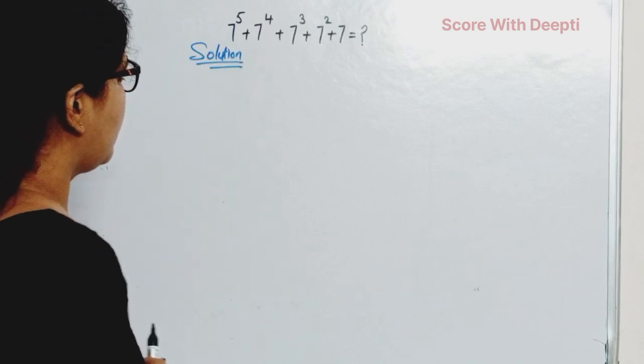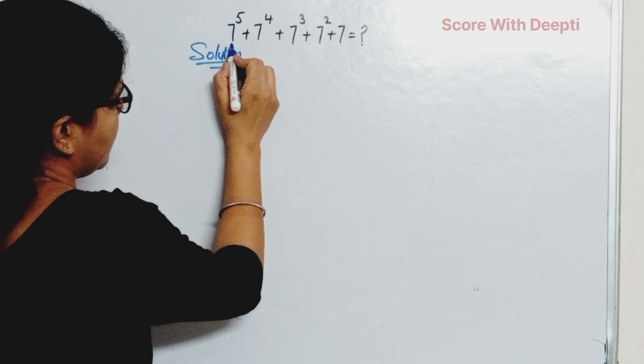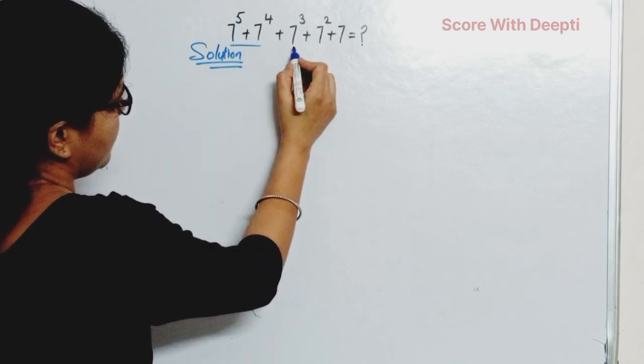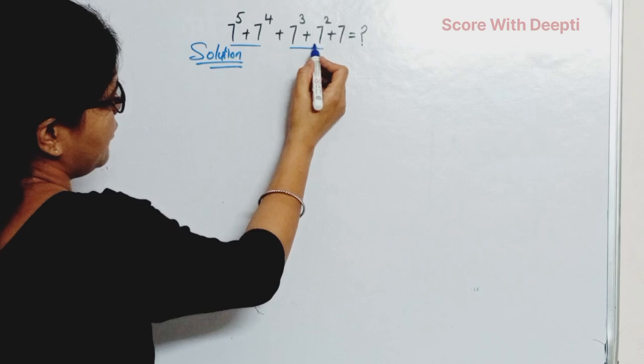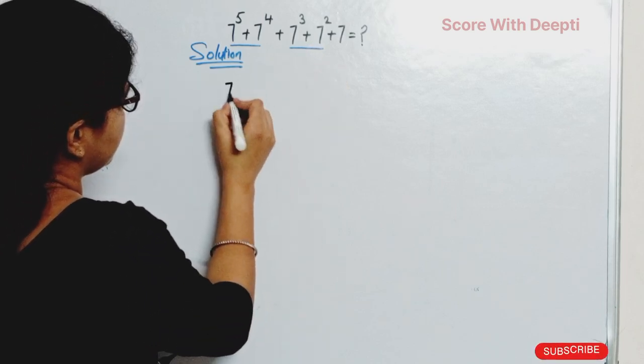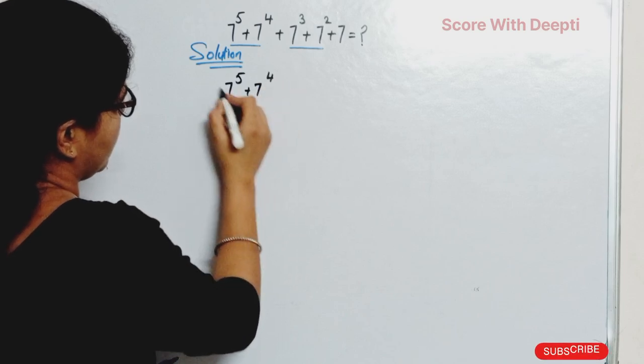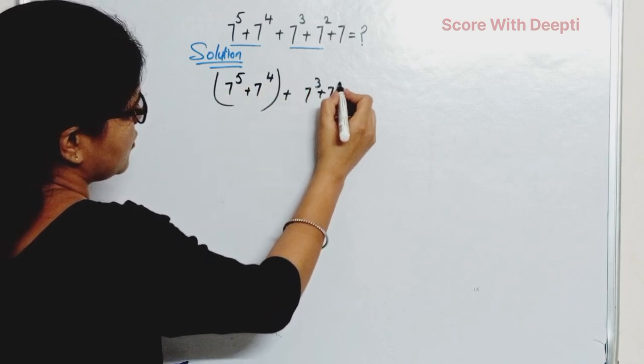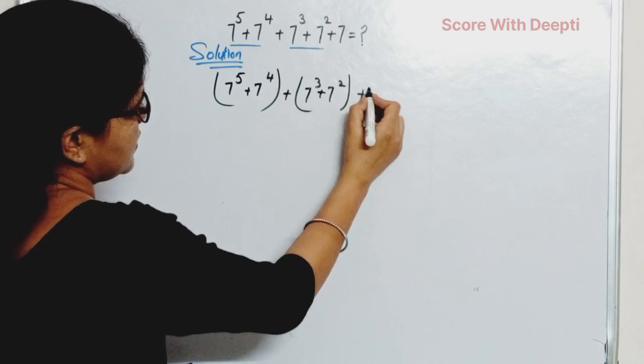In this problem, first we make pairs. We make these two terms one pair and these two terms in one pair. Next, we write 7^5 + 7^4 + 7^3 + 7^2 + 7.